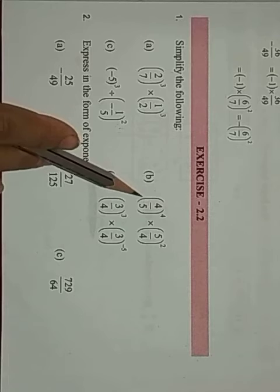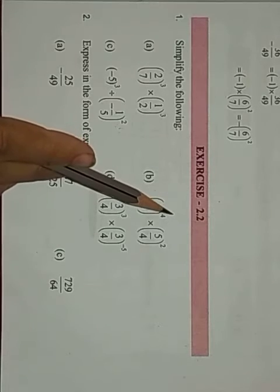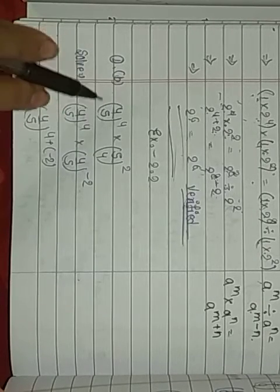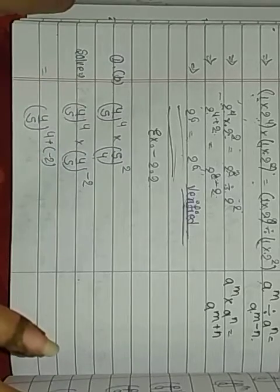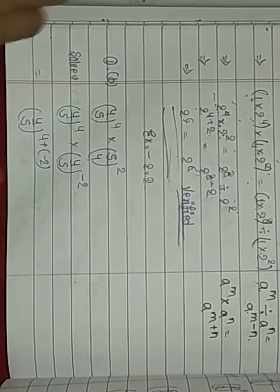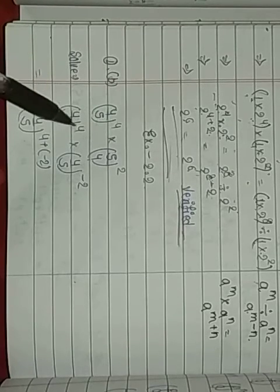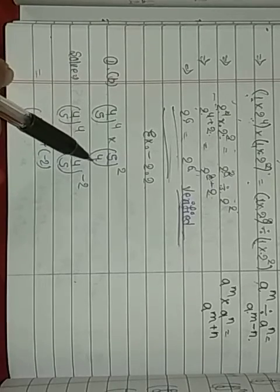Let's look at question B. See here, the question is: (4/5) whole power 4, multiply (5/4) whole power 2. So what is 4/5? And 5/4 is its reciprocal.